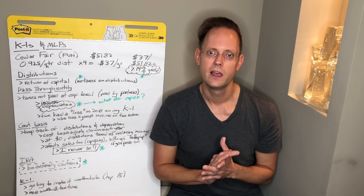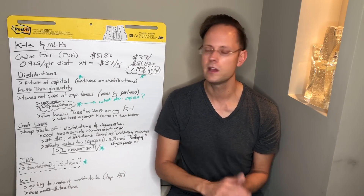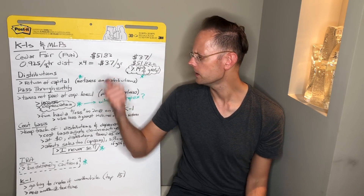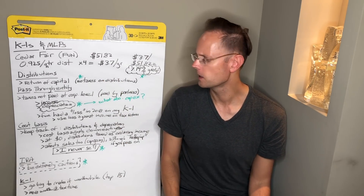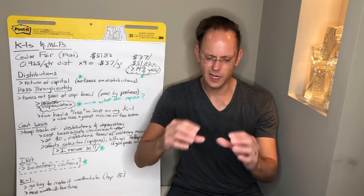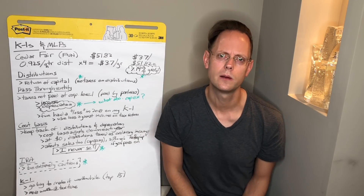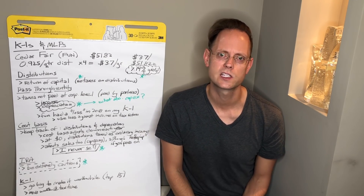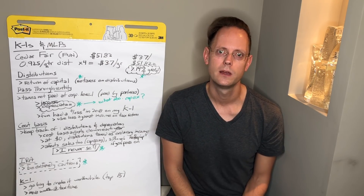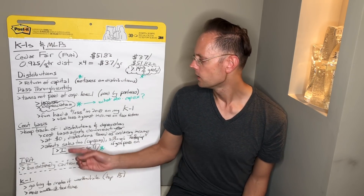I'm going to continue to average into this one over the course of 2019. I really like this stock. I like how it provides diversification into the amusement park industry, I like how it's set up from a tax perspective, I love the yield, and it's a nice smaller company.